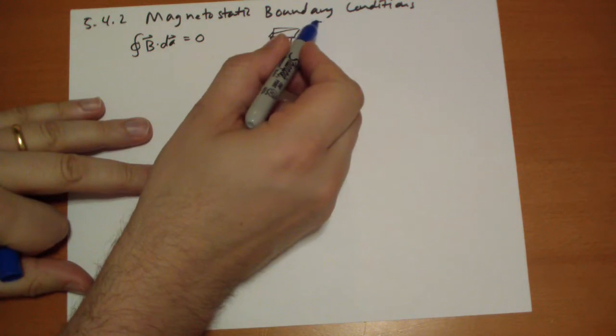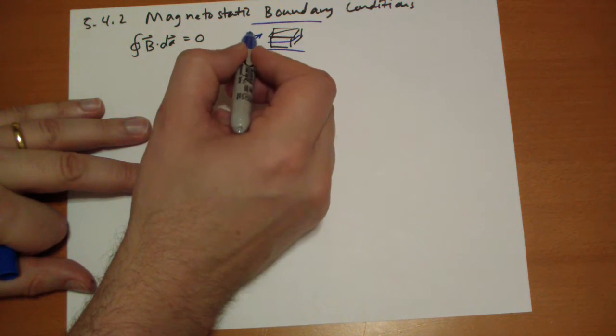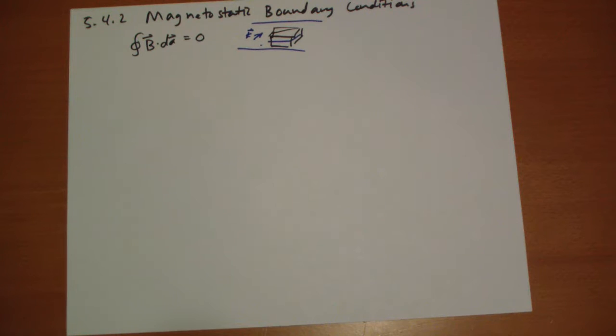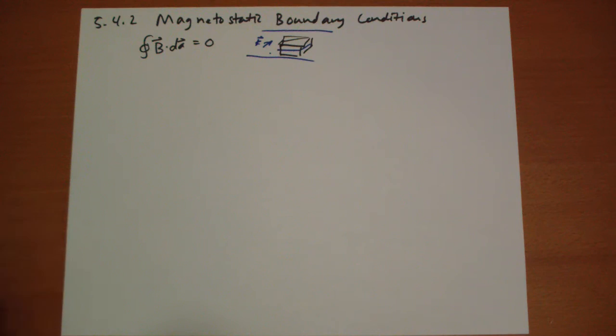And our little surface current, when we zoom in with our super microscope of calculus, we have some K vector that's moving the surface current across there. And so we know that the flux, the magnetic flux through this box must be zero, because the divergence of B is zero.